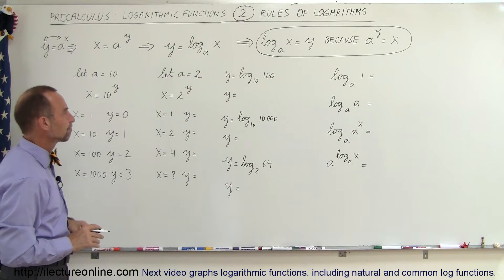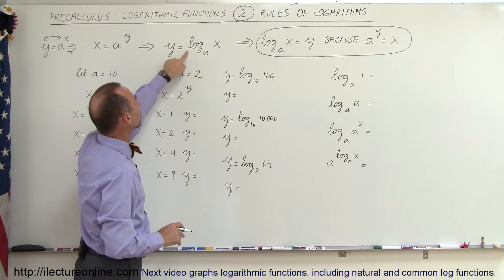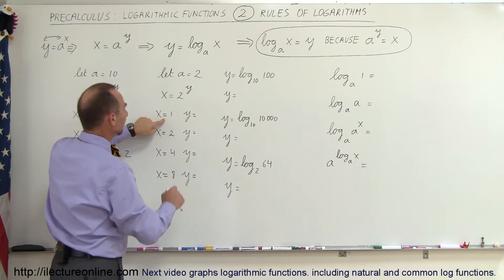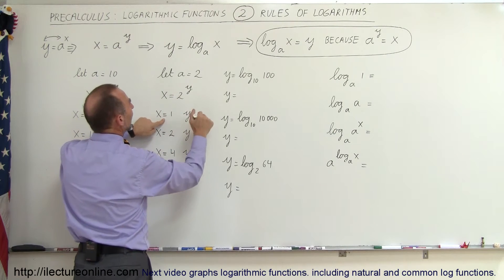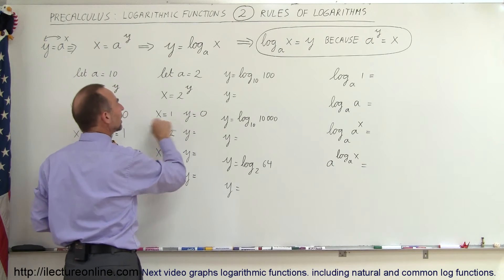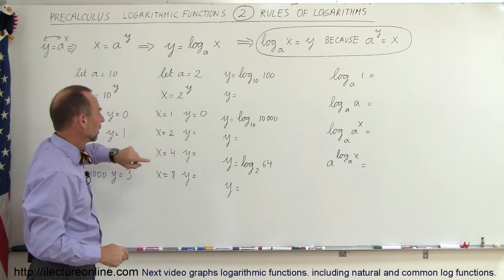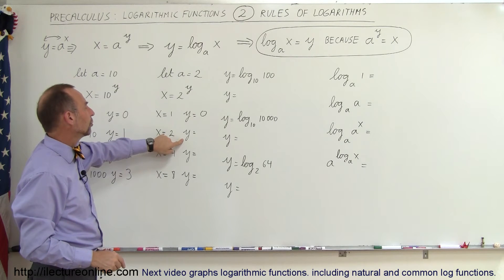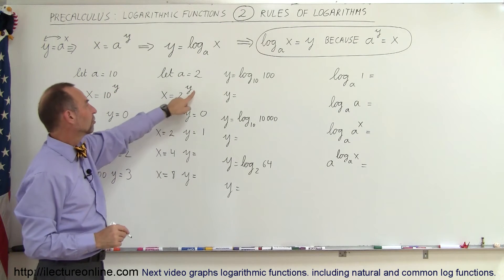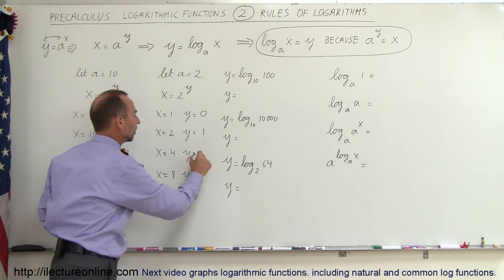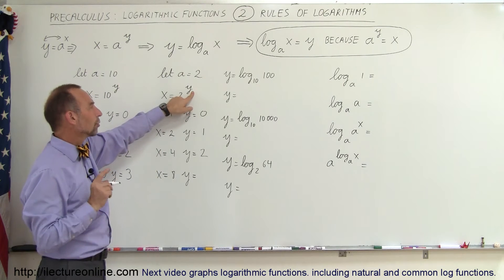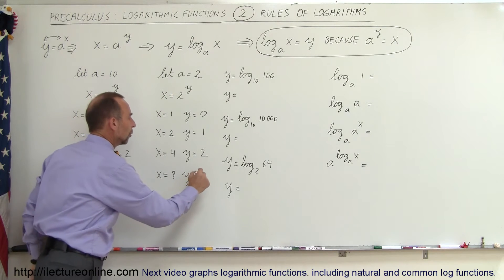What if the base equals 2? Then we have y equals log base 2 of x. When x equals 1, y equals 0, because 2 to the 0 power gives 1 — just like base 10. When x equals 2, y equals 1, because 2 to the first power gives 2. When x equals 4, y equals 2, because 2 to the second power gives 4. And when x equals 8, y equals 3, because 2 to the third power gives 8.